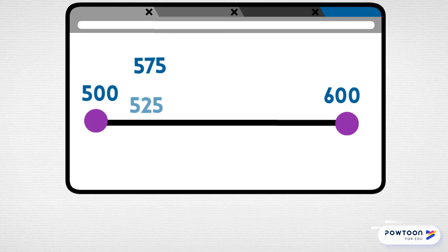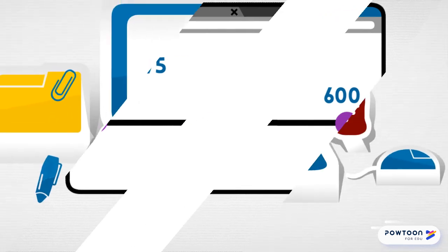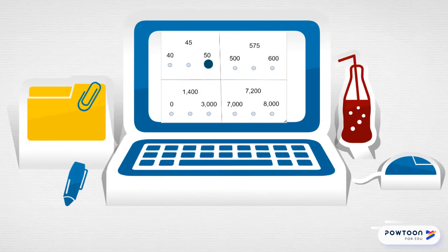525, 550, 575, 600 — it's right before 600. I figured it out. So now I can put my dot right under 600. I'm confident that 575 is closer to 600. I bet you got that one right too!